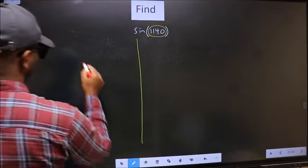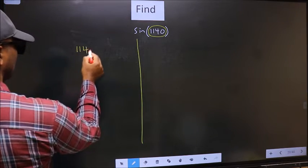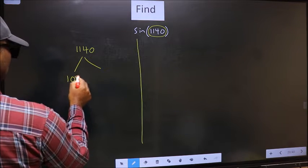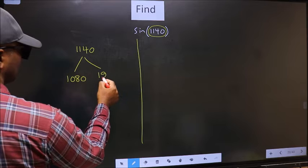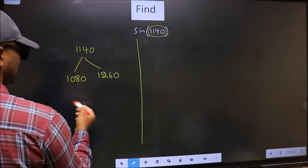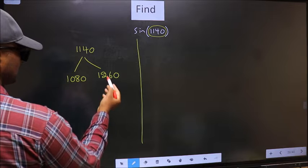What I mean is, 1140 lies between 1080 and 1260. This is 180 x 6 and this is 180 x 7.